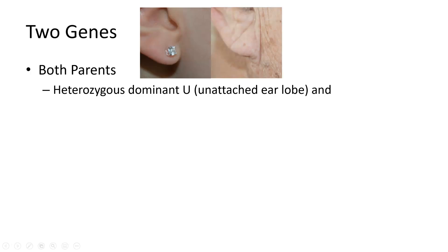When we look at an unattached earlobe, we see this. You can see the one on the left has the bottom of the ear come up, and it produces a little dangle on the bottom of the ear, whereas the one on the right has the earlobe come down and attach, with no little upcut for that dangle.